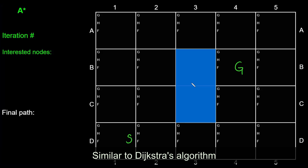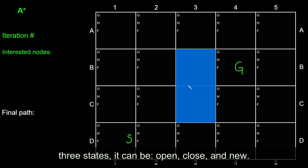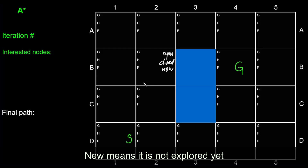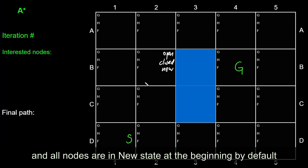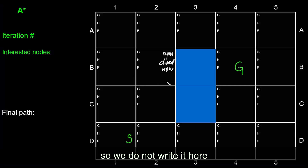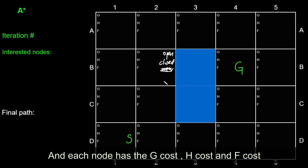Similar to Dijkstra's algorithm, each node is in one of three states: it can be either open, closed, or new. New means it's not explored yet, and all nodes are in the new state at the beginning by default, so we do not write it here. Each node has the g cost, h cost, and f cost.